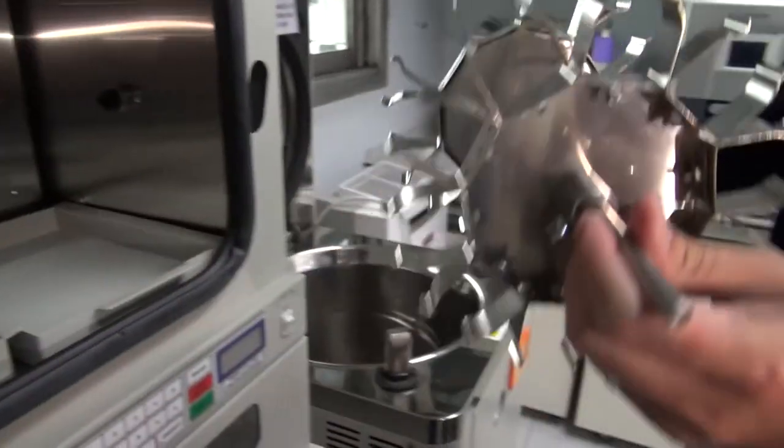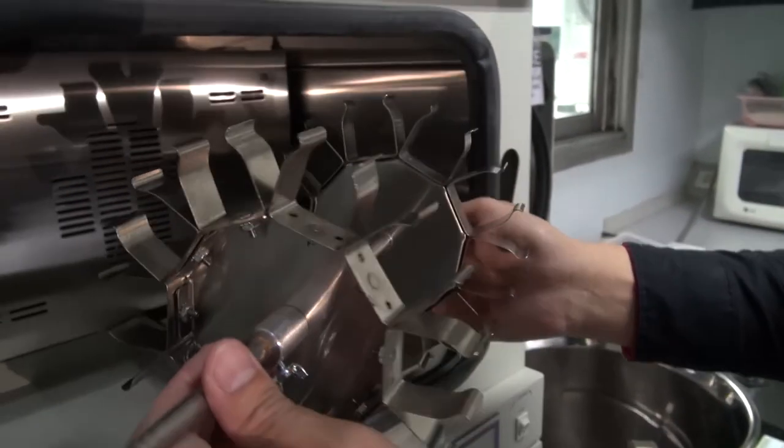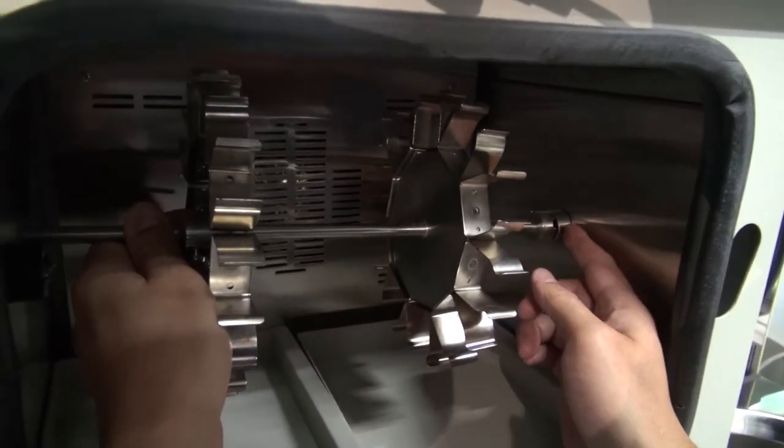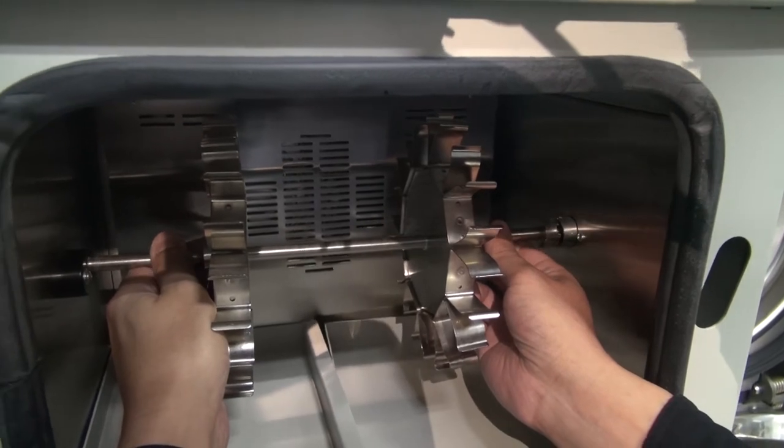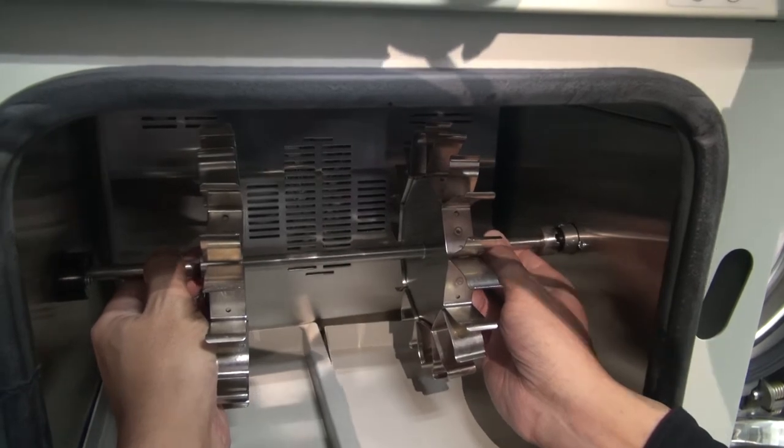To insert the carousel assembly into the unit, press the right shaft to the position and then insert the left shaft to the position until the click sound is heard.